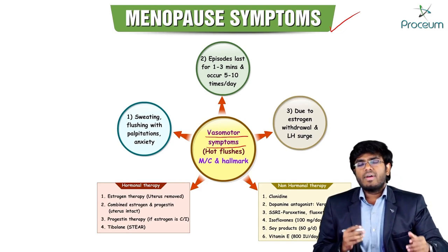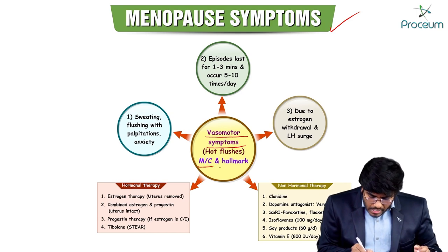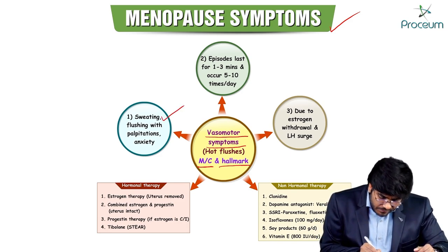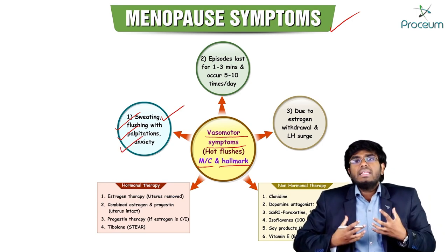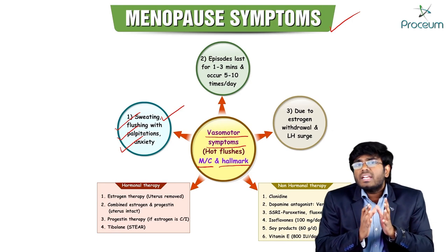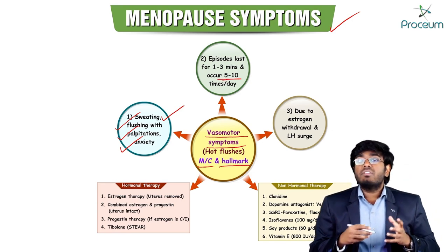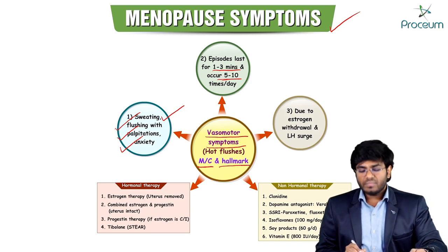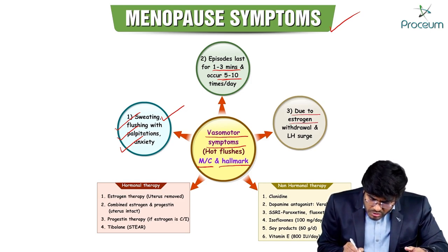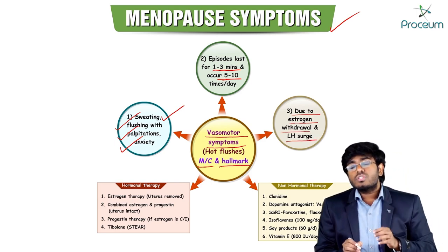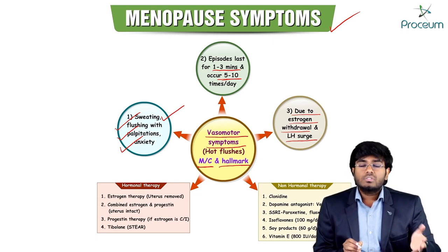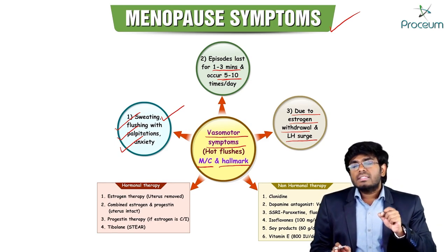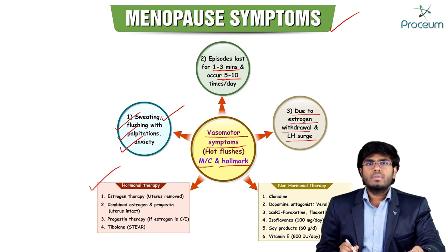The first and most classical symptom of menopause is the vasomotor symptom — hot flushes. Hot flushes involve sweating, flushing, palpitations, and anxiety. A female experiences these episodes five to fifteen times, and each episode is transient, lasting one to three minutes. Hot flushes are due to estrogen withdrawal and LH surge.